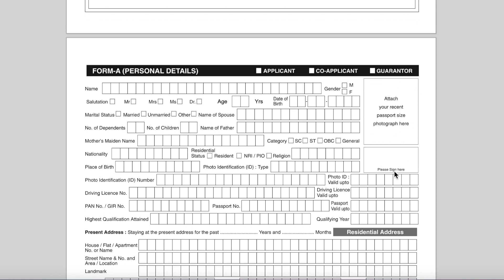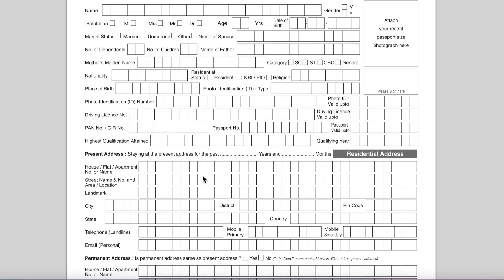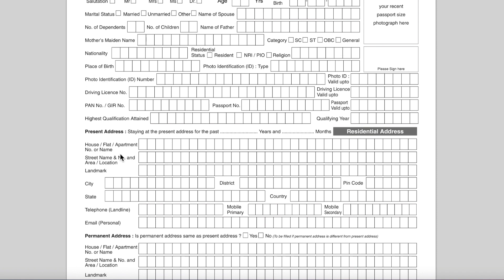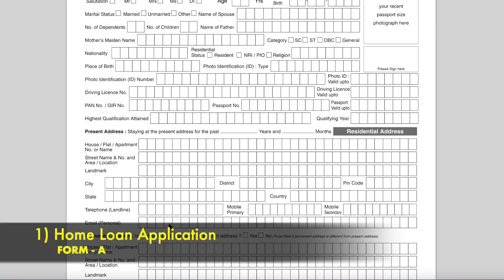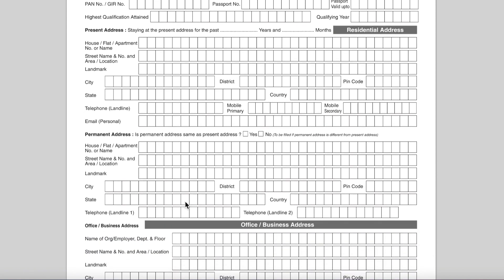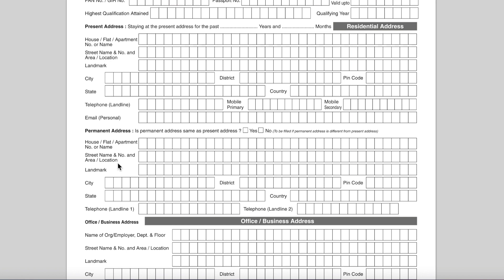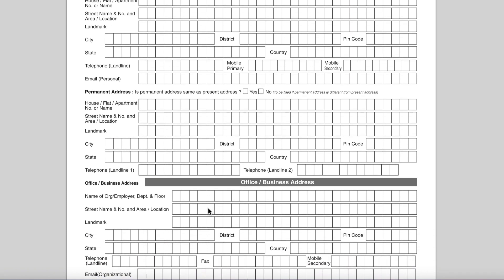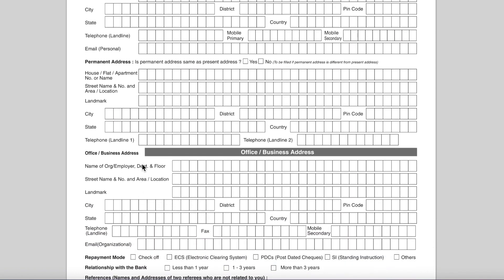For present address, fill in the current address, how many years and months you have been staying there, and details such as house or flat number, city, state, district, and country. Provide your personal email ID. For permanent address, if it is the same as present address, mark yes and skip it; otherwise fill in all details including house number, flat number, city, state, and telephone number. If you have an office or business address, fill in the organization name, landmark, city, state, phone number, and organization email ID.